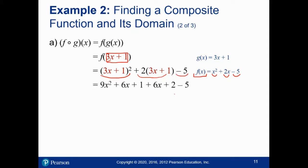And now we just have to foil out that first thing, which is 9x² + 6x + 1. Distribute the 2, and we get 6x + 2. And then we have -5, and now it's just a matter of simplifying it down to get 9x² + 12x - 2.